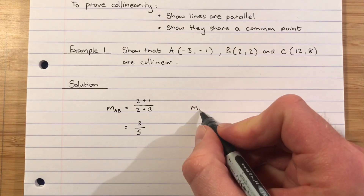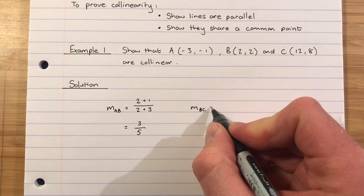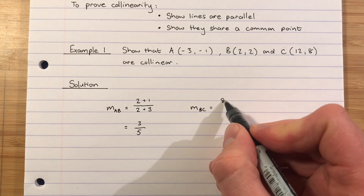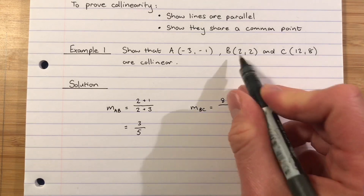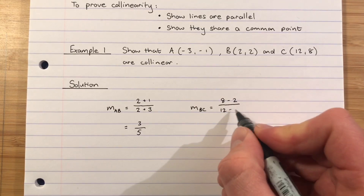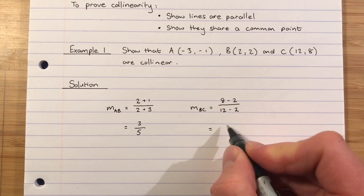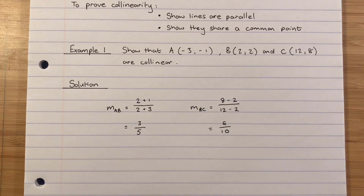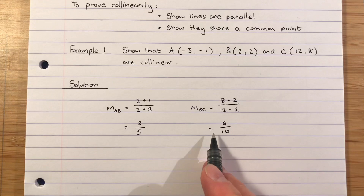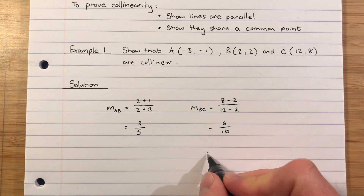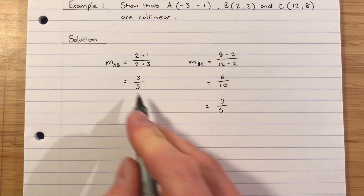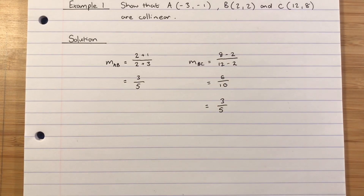Now let's find the gradient of the line joining B to C. That's (8 − 2) over (12 − 2), which gives 6 over 10. Simplifying 6/10 gives us 3/5 — the same gradient as AB. So yes, those two lines have the same gradient and are therefore parallel.